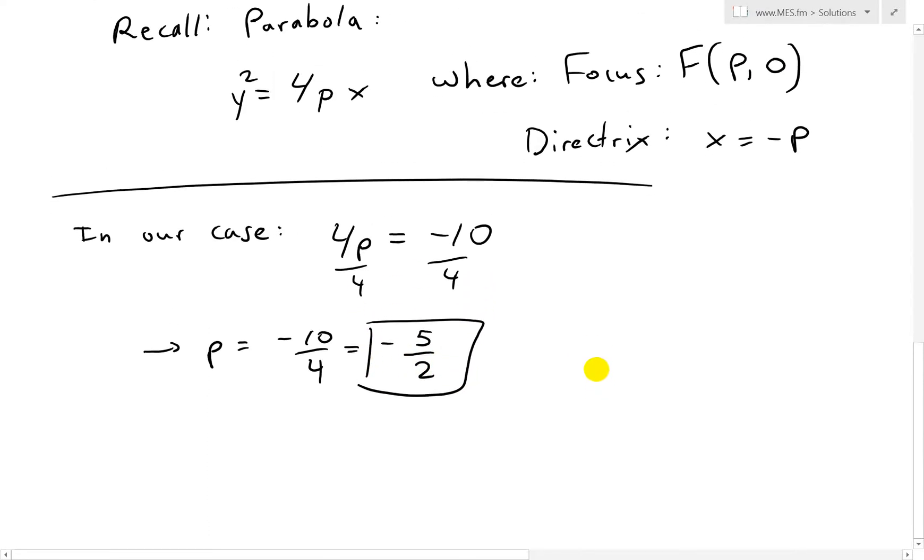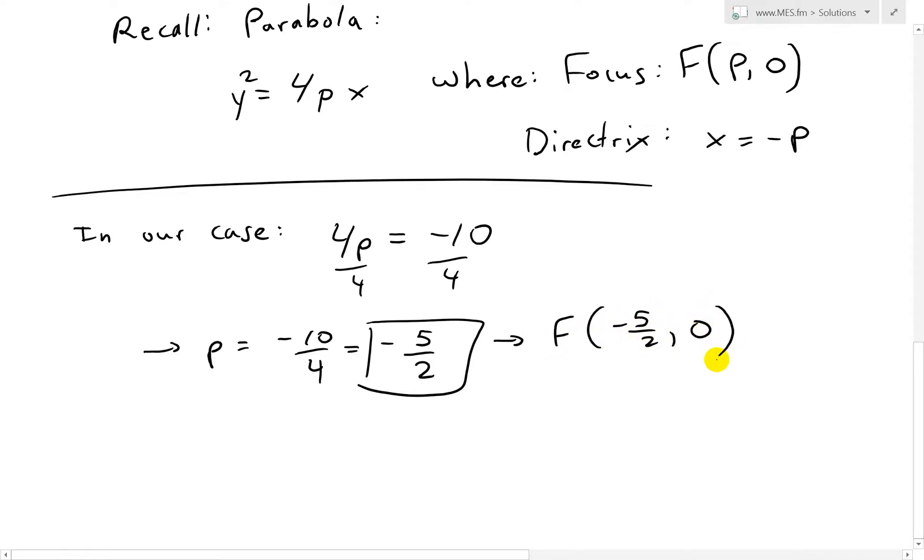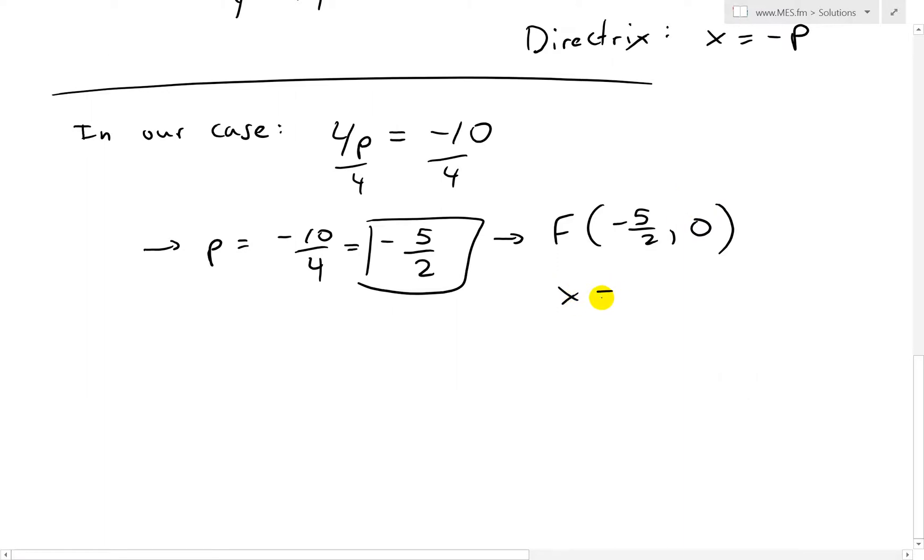So then this means that the focus F is going to be (-5/2, 0), and then the directrix is x = -p, which is x = 5/2, like that.